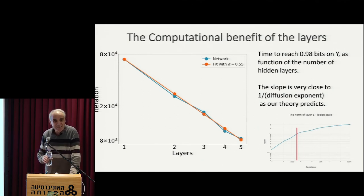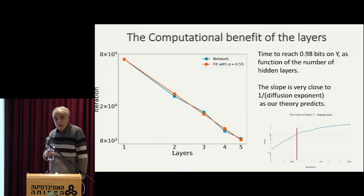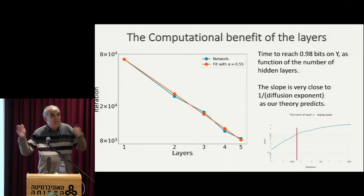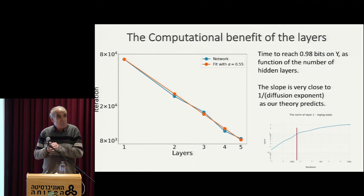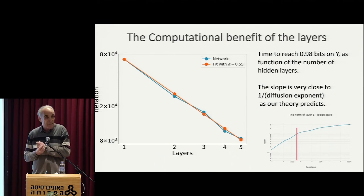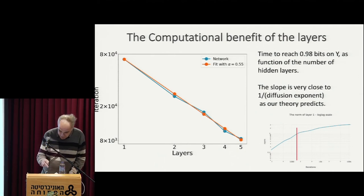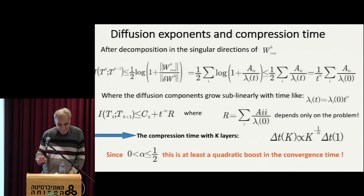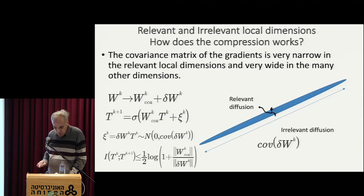What can explain this? Nobody said it before, although people observed it, but nobody really predicted it. Something very bizarre happens here. Most of the benefit of adding many layers is computational — you really improve the time of convergence by adding layers. Since I'm having only two minutes left, I'm taking it seriously, and I just want to show you why it happens in one or two slides.